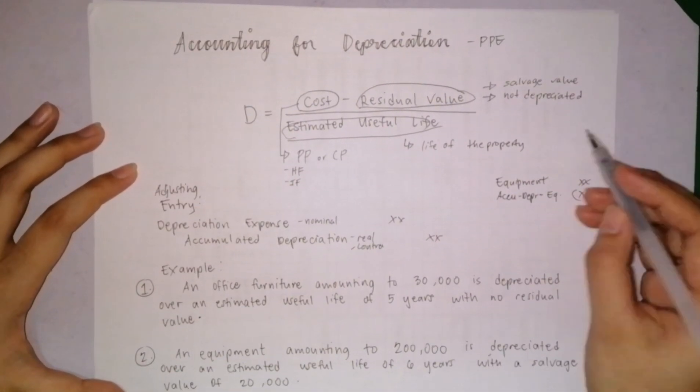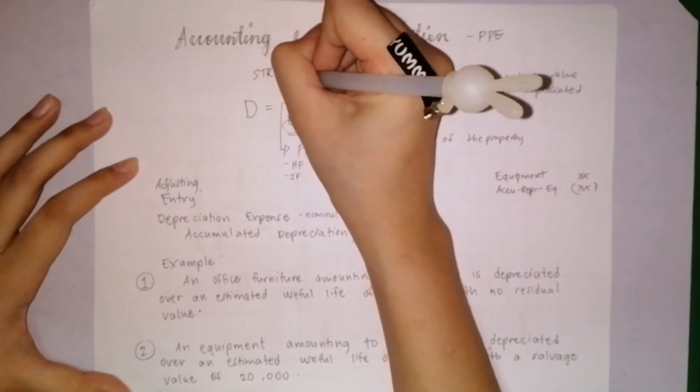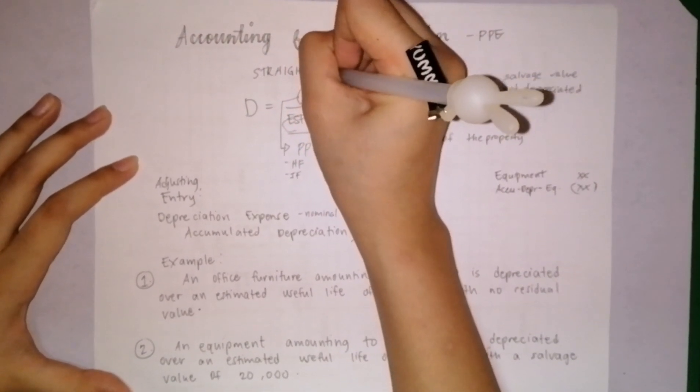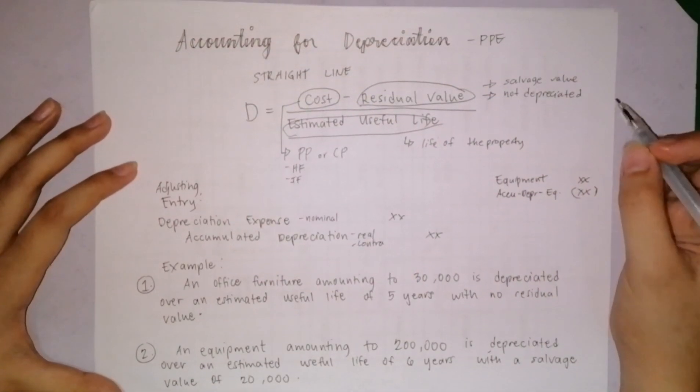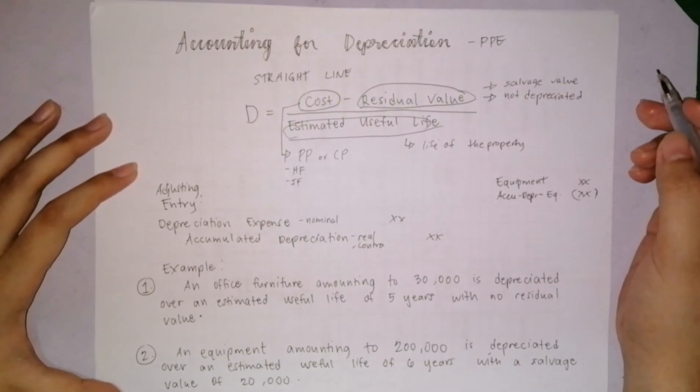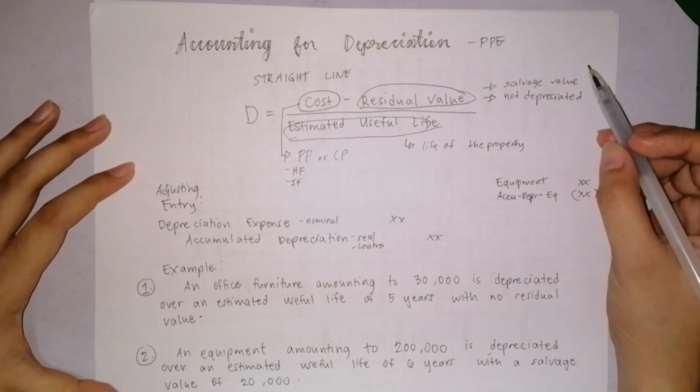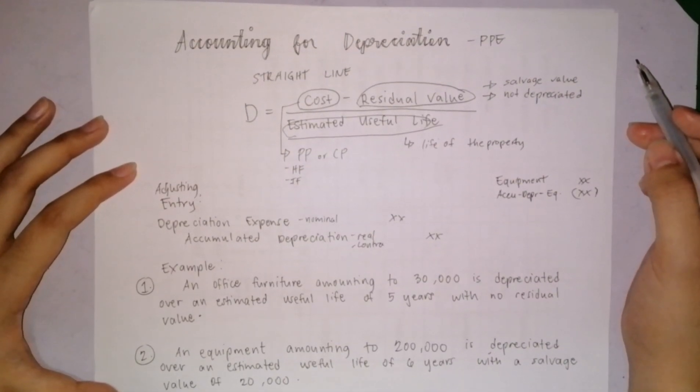Also, in addition, this formula of depreciation is known as the straight line method, which means for every year, the depreciation obtained is equal. This is the simplest form and is usually what's used. But there are other methods, such as sum of years digit, double declining method, and many more.